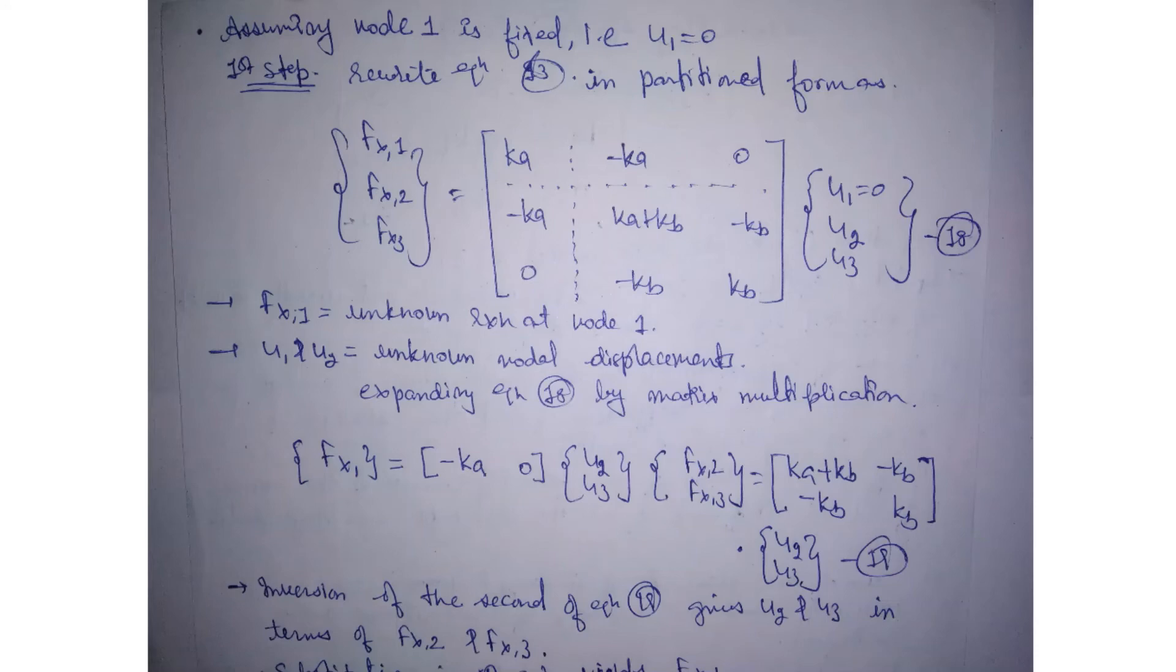We will assume that node 1 is fixed. This means U1 equals 0, and this is the normal stiffness equation. We will rewrite the matrix in the partitioned form: Fx1, Fx2, Fx3 as it is, then the partition will be above and below with vertical line and horizontal line, and U1 is 0. We will take this as equation 18.